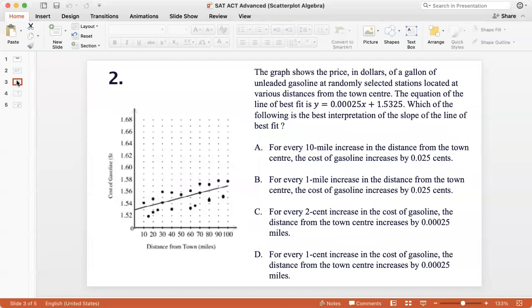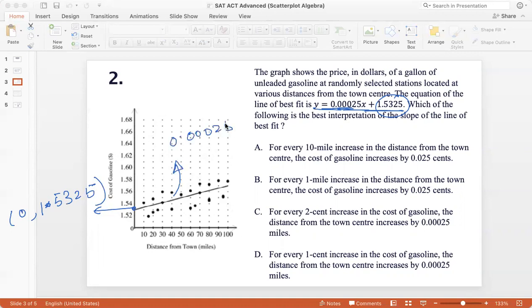Okay, question 2. The graph shows the price in dollars of a gallon of unleaded gas sold at randomly selected stations located at various distances from the town center. So the equation of the line of best fit is y equals 0.0025x plus 1.5325. Which of the following is the best interpretation of the slope of the line of best fit? So the y-axis is the cost of gasoline and the x-axis is the distance from the town center. So I can see that my y-intercept from this equation is 1.5325. So this point would be 0, 1.5325, and the line has a slope of 0.0025. This is the slope of the line. So what is the best interpretation of the slope?